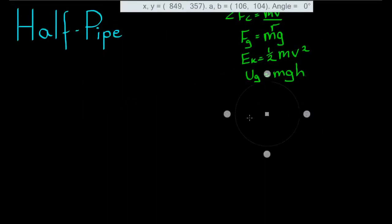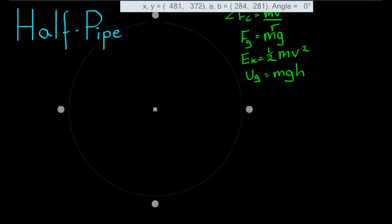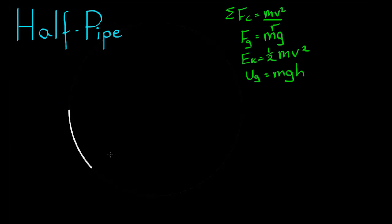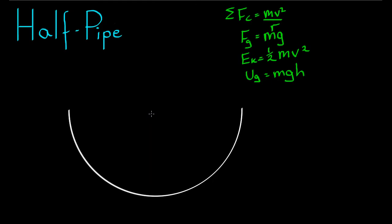In this question we're going to look at the forces experienced by an Olympic snowboarder as she goes down to the lowest point of a half pipe. So we'll draw the half pipe here.